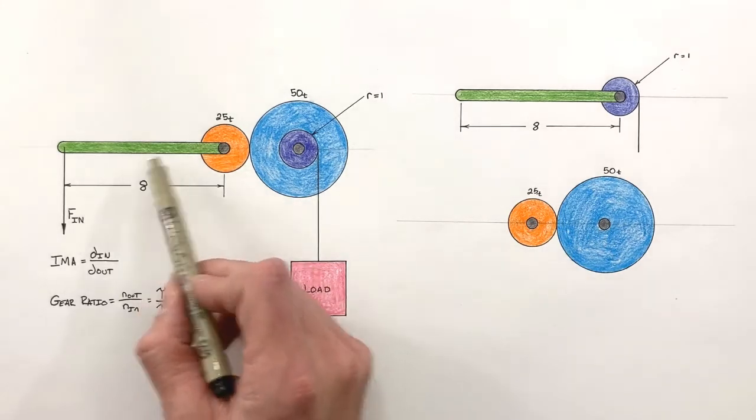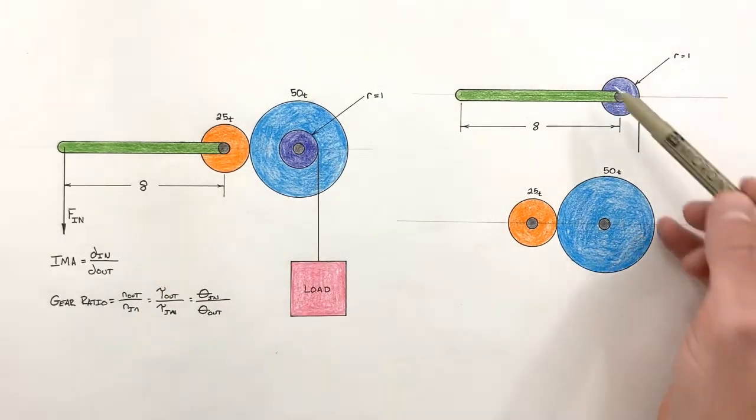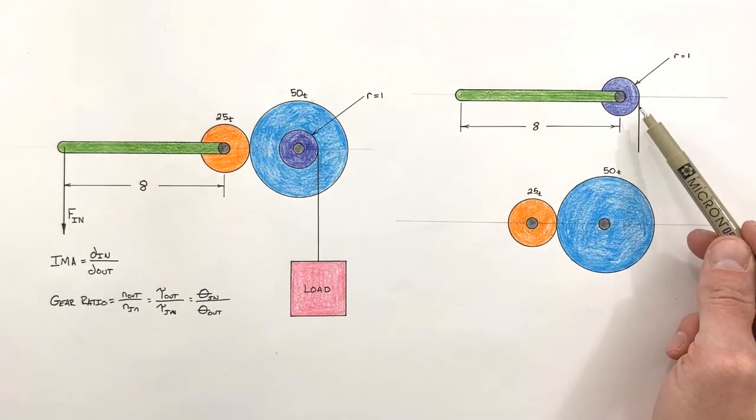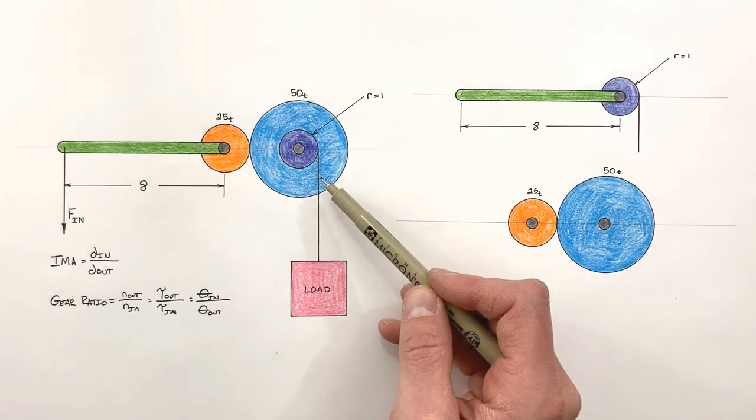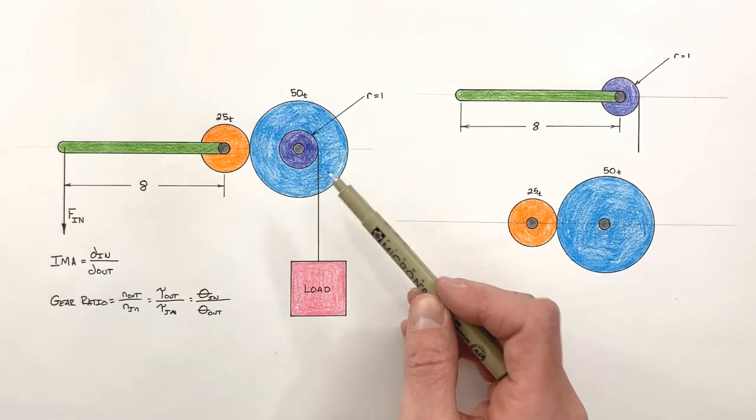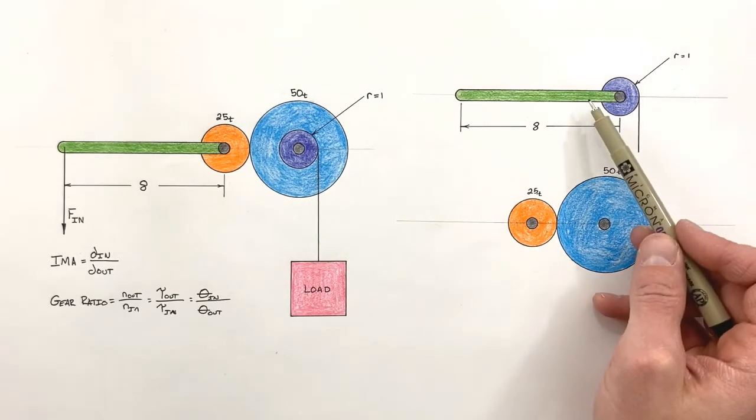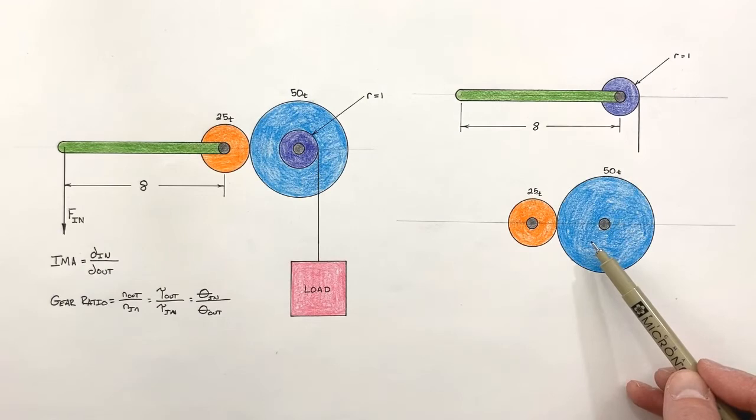And so what we've done is we've broken up our compound machine into a simple machine and a gear train. And if we want to come up with the total IMA of this entire compound machine, all we need to do is work out the IMA and gear ratio for a simple machine and gear train.